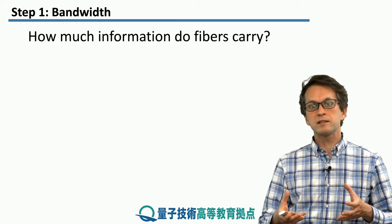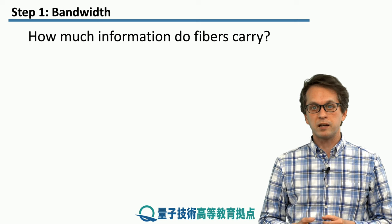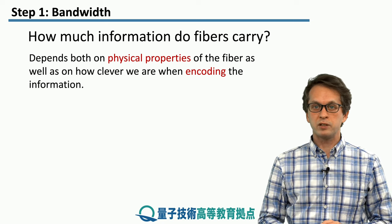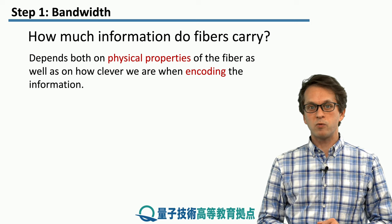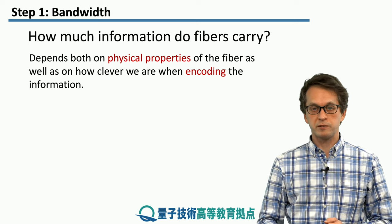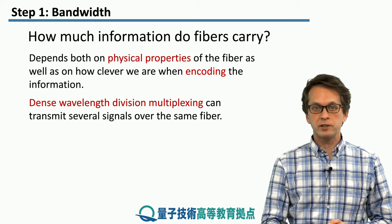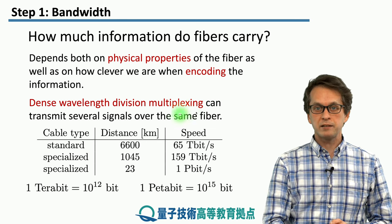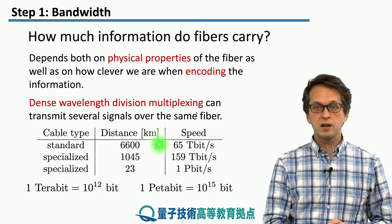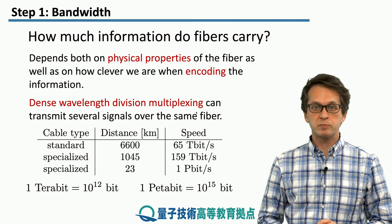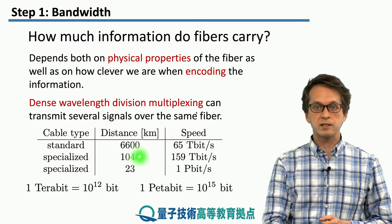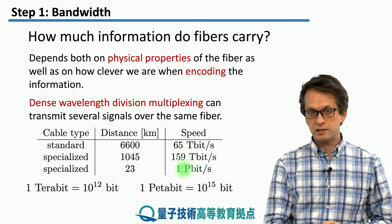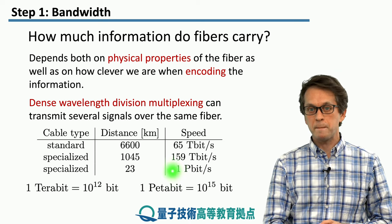Bandwidth tells us approximately how much information a cable or fiber can carry. This depends on both the physical properties of the fiber itself, as well as how clever we are when it comes to encoding the information before it gets transmitted. With modern techniques of dense wavelength division multiplexing, we're able to reach some staggering speeds. For example, in a standard cable over a distance of 6,600 kilometers, we can reach speeds of around 65 terabits per second. In a more specialized cable and over shorter distances, this can be increased to over 150 terabits per second. And over very short distances, we achieve speeds of one petabit per second. A terabit is 10 to the 12 bits, while a petabit is 10 to the 15 bits.